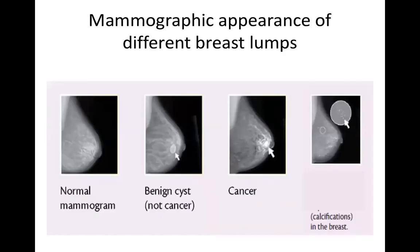This is the mammographic appearance for different breast lumps. On one side you can see a normal mammogram. A benign cyst will appear on the mammogram as a rounded, well-circumscribed, radio-opaque lesion within the breast. If it is a cancer, it will again be radio-opaque, but its margins will be ill-defined. Microcalcifications can also be seen, which indicate underlying malignancy or invasive carcinoma.